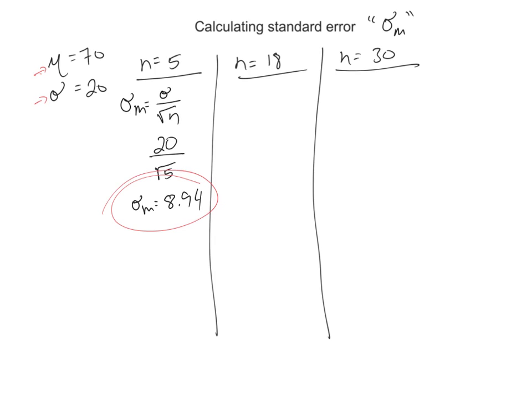And it's high because of our sample size being so small. Watch what happens when we start pumping up that sample size. So again, standard error is standard deviation divided by the square root of the sample size. So 20, in this case though, divided by 18. So our standard error is 4.71. Just by increasing that sample size just a little bit, our standard error went down.